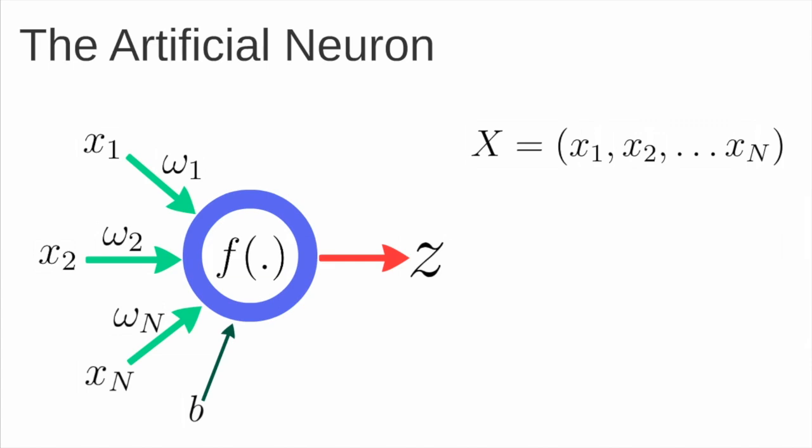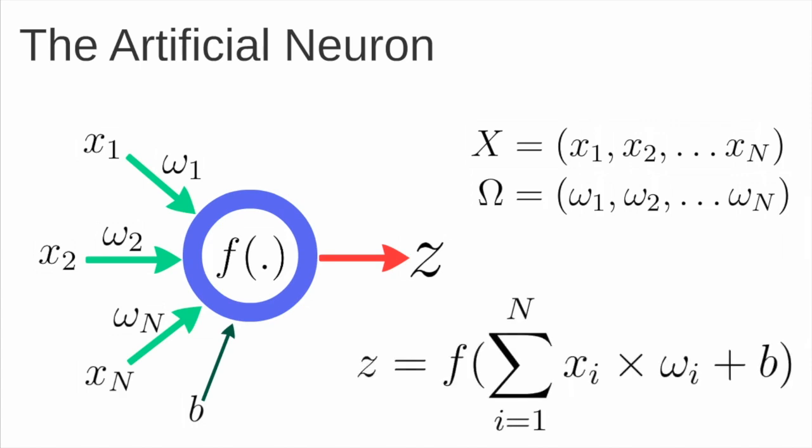The connection between the input and the activation function is done by a set of weights which are represented by Omega 1, Omega 2 up to Omega n. Besides this we have a bias which is the letter B, and after applying the activation function, the output is represented by the letter Z.